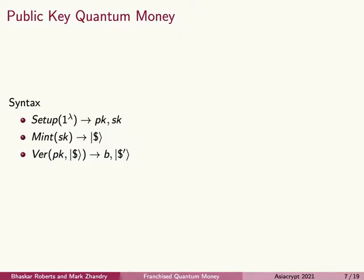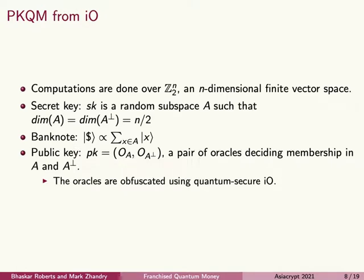First, I'll go over the syntax for public-key quantum money. The money scheme uses a public and secret key. The secret key is used by the bank to generate new banknotes — that's the mint function. The bank is trustworthy, and only they know the secret key. The public key can be used by anyone to verify that a given banknote is valid. B is a bit that says whether or not the banknote was accepted by the verification function. Finally, we require that a valid banknote is perturbed negligibly by verification.